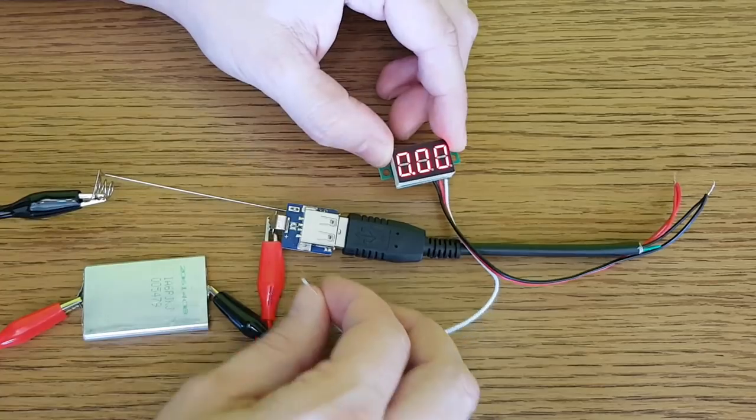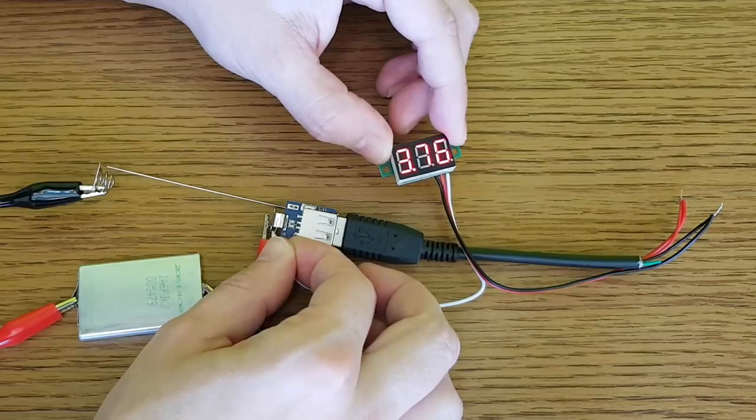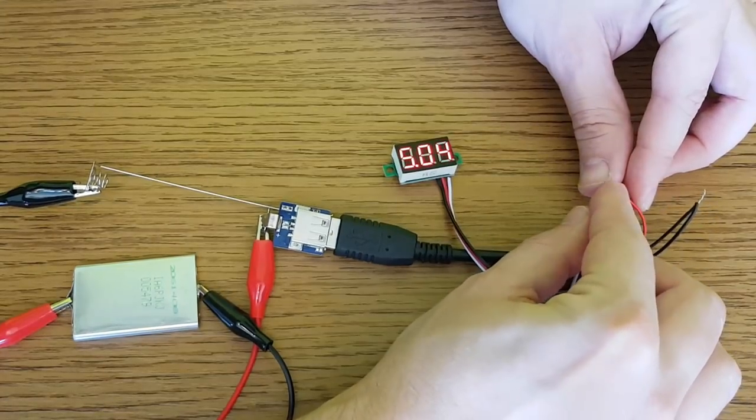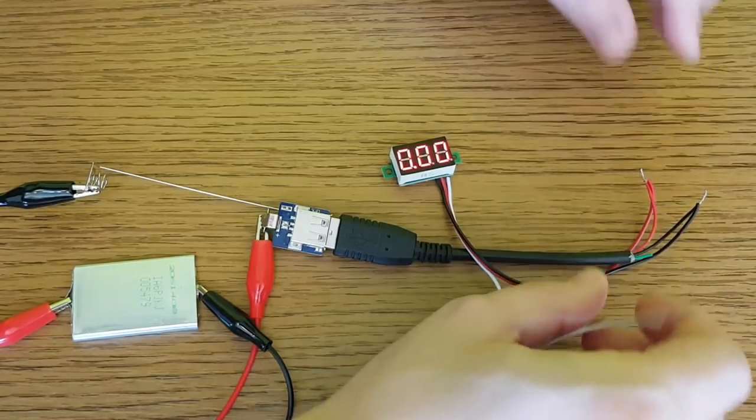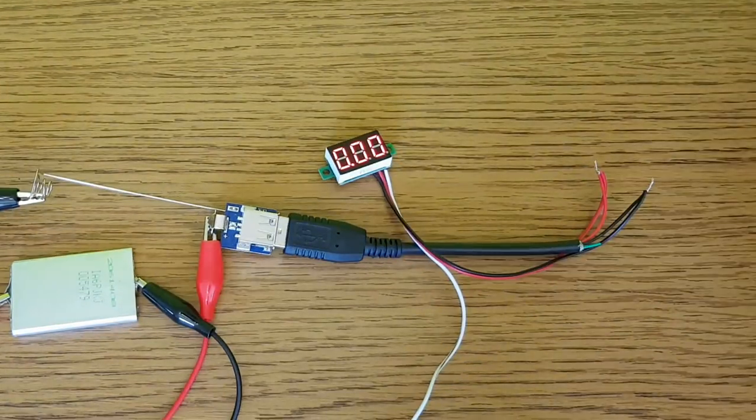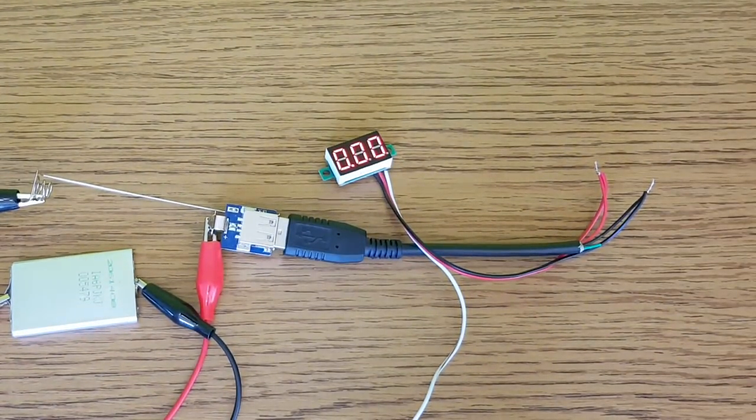Now let's try the voltmeter with the new battery. 3.7 volts for the lipo cell and 5 volts for the power bank. But the power bank it's not actually activated. The voltmeter it's using too little current.